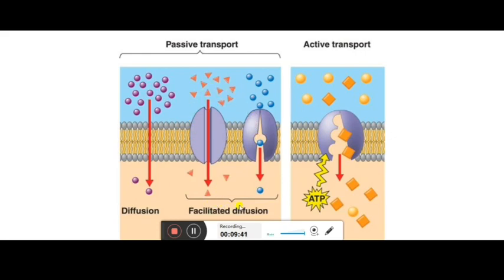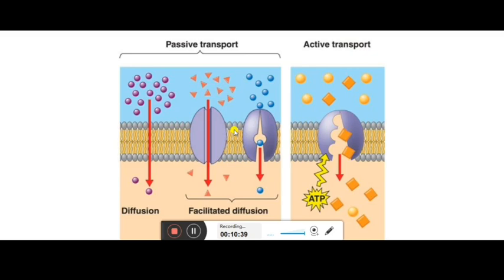Osmosis is a facilitated diffusion and both are known as passive transport. In osmosis, only the solvent molecules — liquid molecules, not gases nor minerals — move from higher concentration to lower concentration. One more condition is required: the semi-permeable membrane. This semi-permeable membrane is required for osmosis and will only allow solvent molecules, that is liquid molecules, to enter inside and does not allow them to go outside.